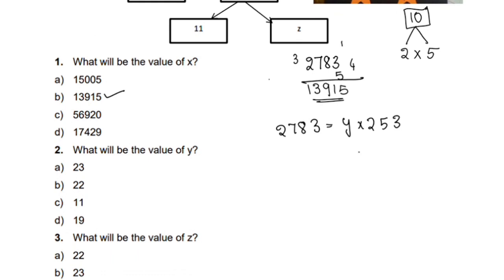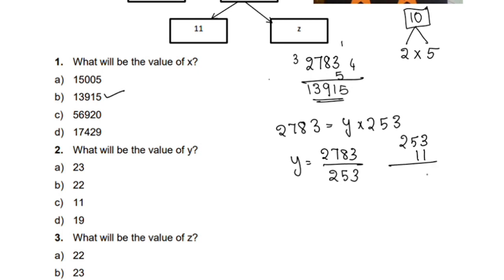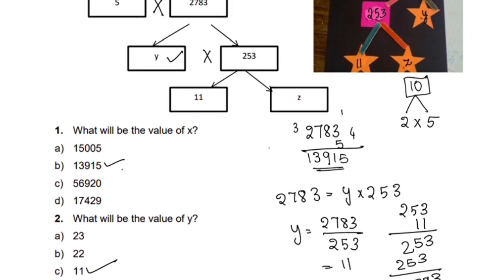We calculate 2783 divided by 253. Working through the division: 253 goes into 2783 giving y equal to 11. Option C is correct.